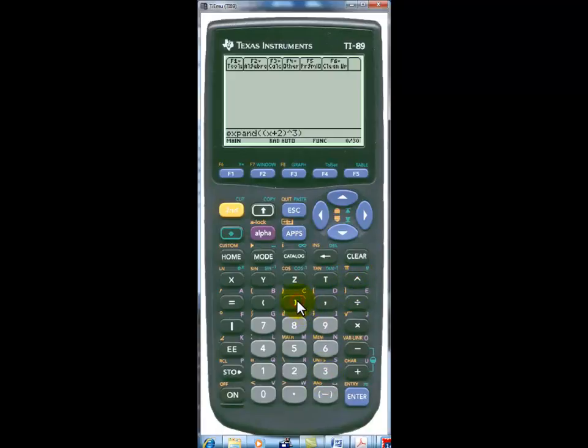Then right paren. Your left parens and right parens always need to match, and then enter. And there we see the expansion of X plus 2, and you can basically expand any polynomial that you so choose using the Expand command.